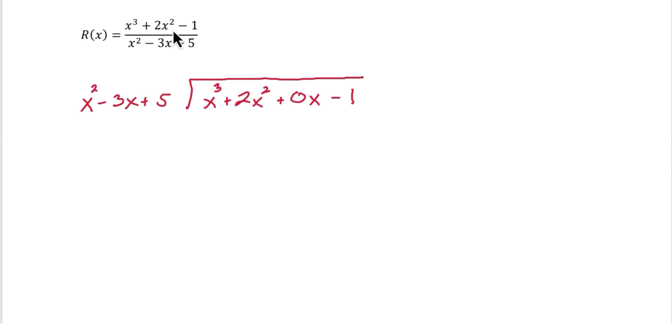And now we do the division. First term divided by first term. So x cubed divided by x squared. If you need to, we can do that off to the side. That gives us an x. So that goes up here. And then we distribute.